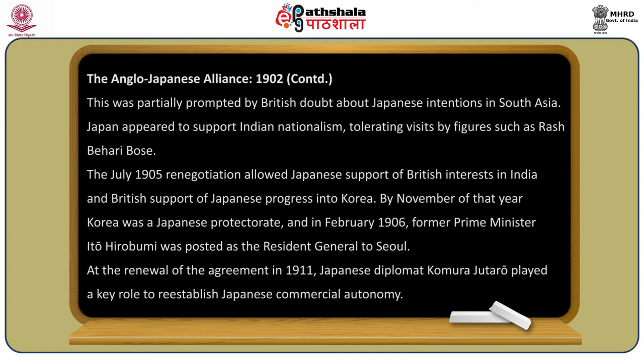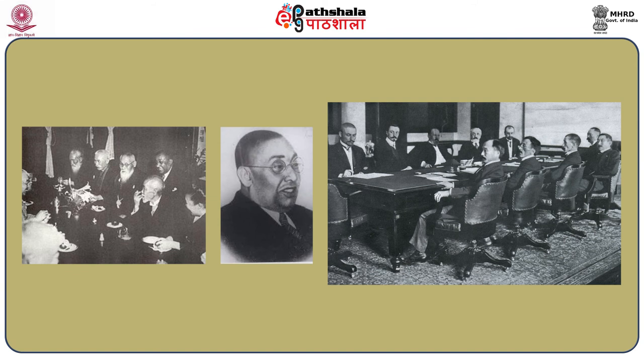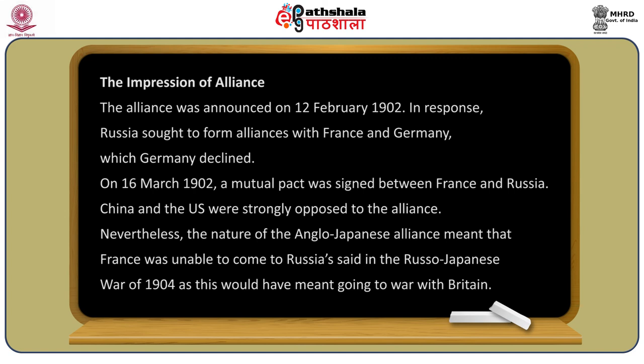The July 1905 renegotiation allowed Japanese support to British interests in India and British support of Japanese progress into Korea. By November of that year, Korea was a Japanese protectorate, and in February 1906, former Prime Minister Ito Hirobumi was posted as resident general of Seoul. At the renewal of the agreement in 1911, Japanese diplomat Komura Jutaro played a key role in re-establishing Japanese commercial autonomy.